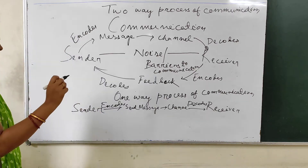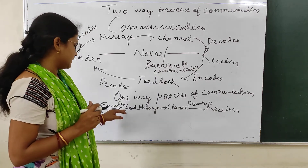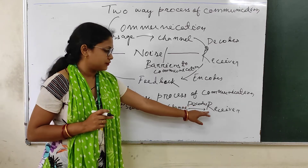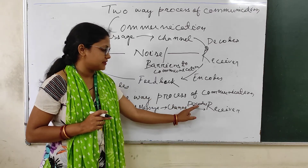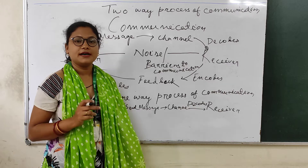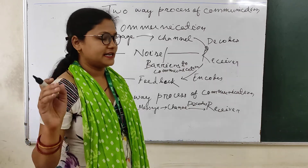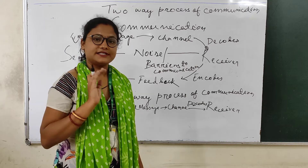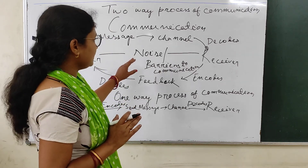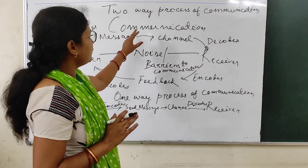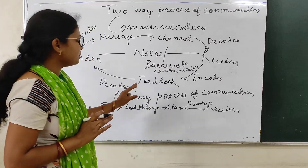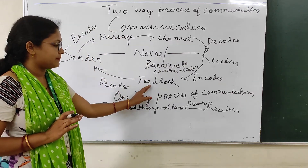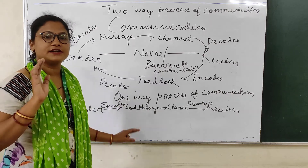This is the one-way process, where the sender encodes a message and sends it through a channel to the receiver, the receiver decodes it to understand — but does not send any feedback to the sender. This is the difference between the two-way process and the one-way process of communication: in the two-way process there is feedback; in the one-way process, there is no feedback.